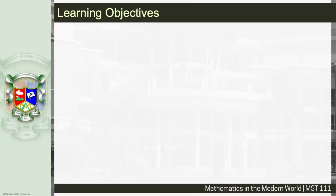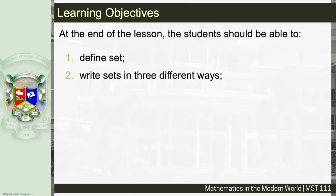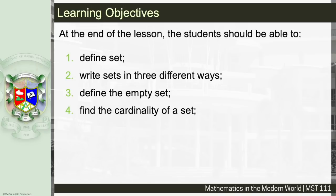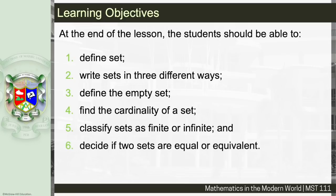Here are our learning objectives. At the end of the lesson, the students should be able to define a set, write sets in three different ways, define the empty set, find the cardinality of a set, classify sets as finite or infinite, and decide if two sets are equal or equivalent.